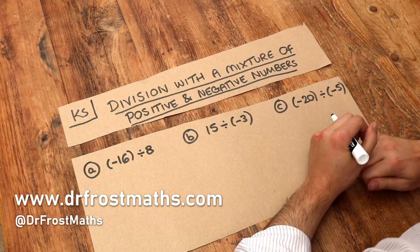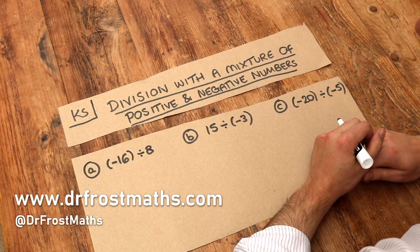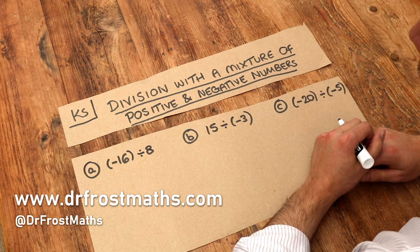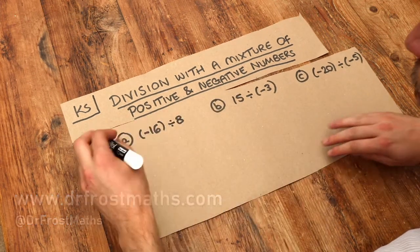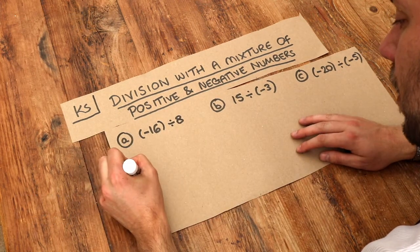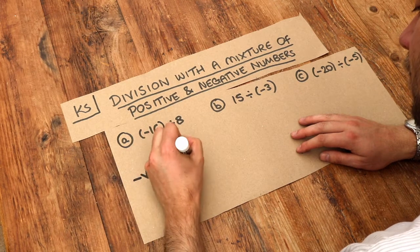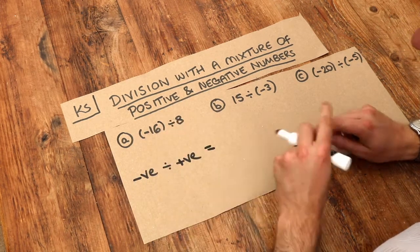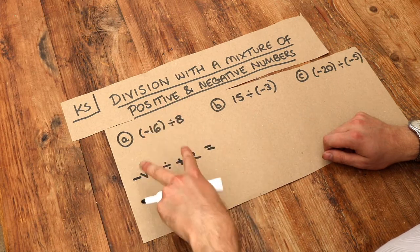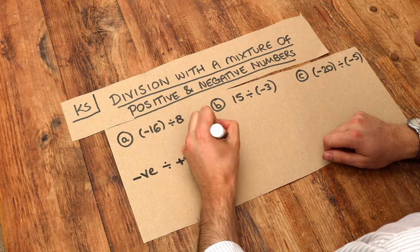Hello and welcome to this Dr. Ross Maths key skill video on division with a mixture of positive and negative numbers. The only rule we need to know is that when we divide a negative number by a positive number, or when we have a mixture of positive and negative with different signs, we end up with negative.